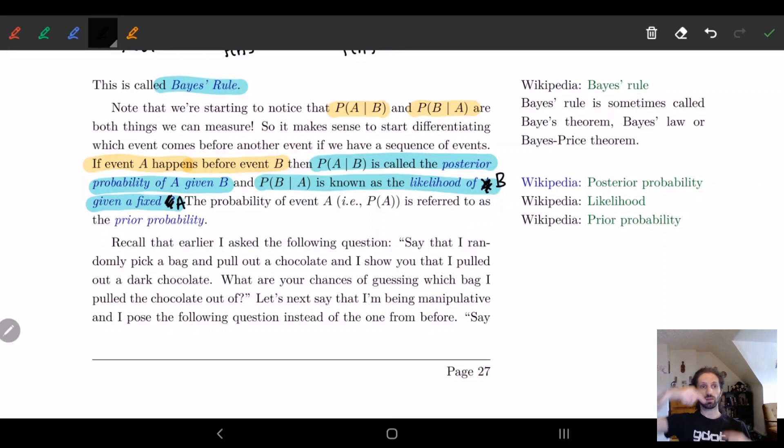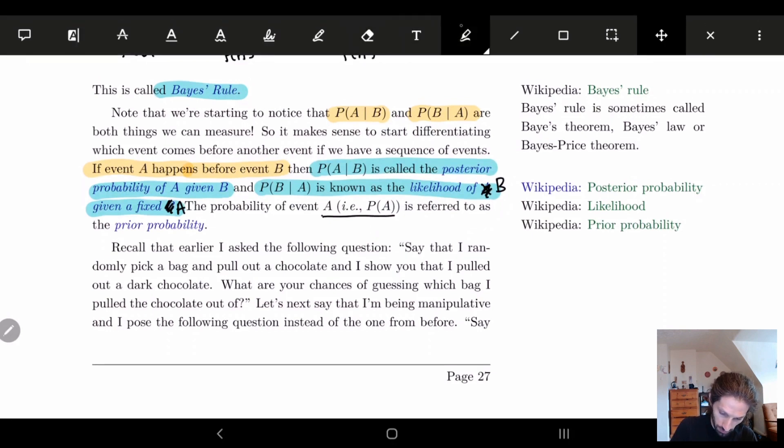The event A, so the probability of A itself, we call the prior probability. This is basically what's happened before. P of A is referred to as the prior probability.